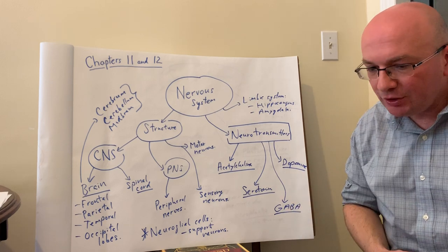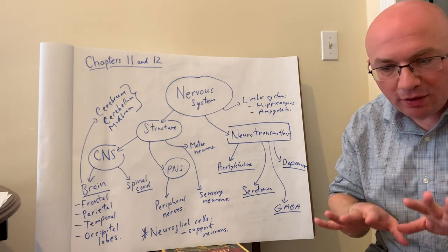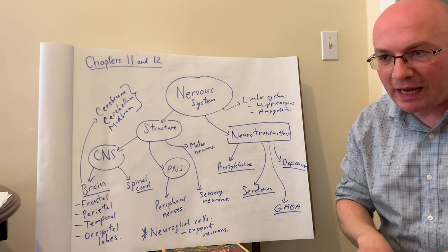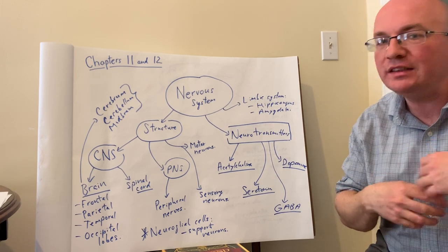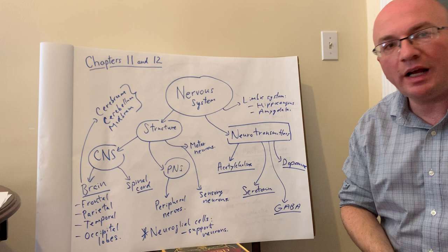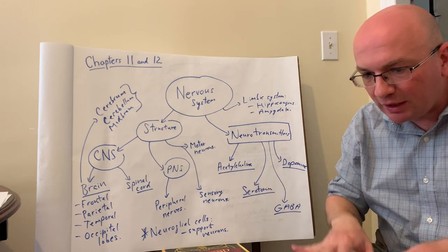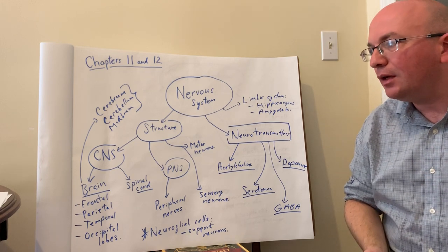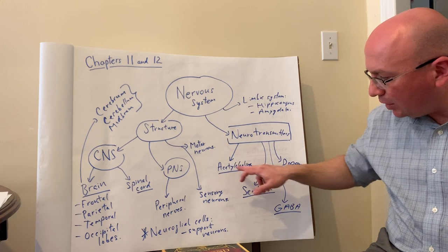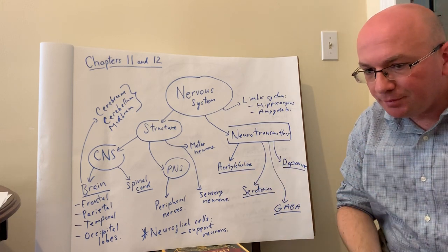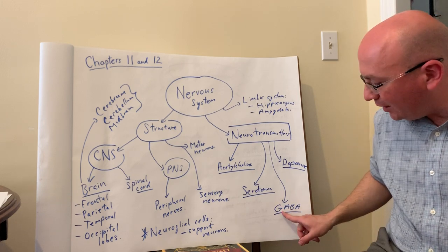GABA, the last neurotransmitter, acts to calm the nerves down. It has a calming, relaxing effect on the nervous system. If neurons are firing too fast — as happens during seizures or epilepsy — GABA often has a calming effect to settle them down and stop the seizures. GABA is essentially an inhibitory neurotransmitter, whereas the others are primarily activating or stimulating activity.